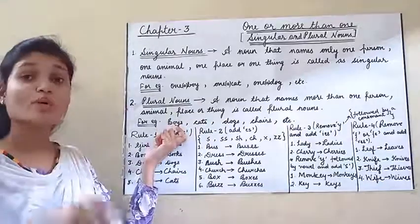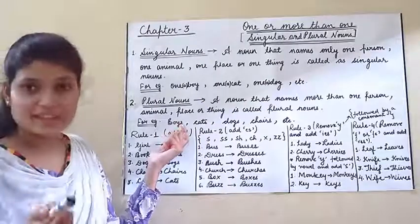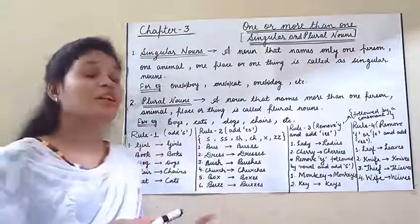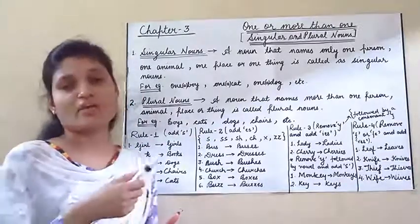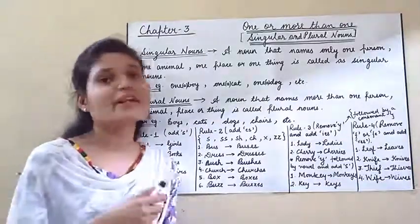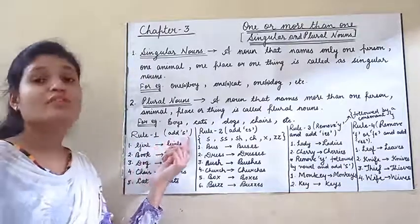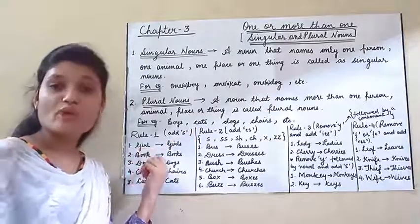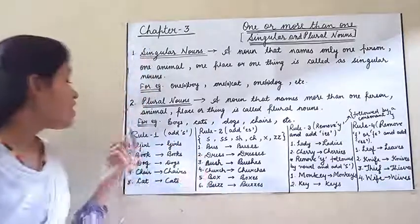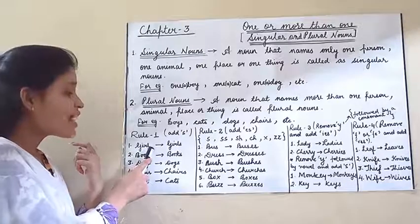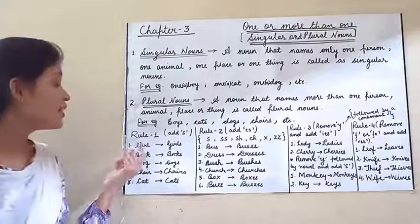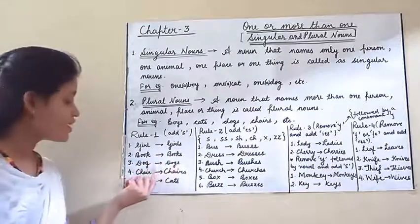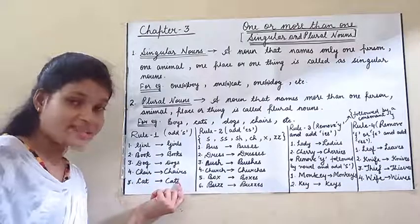Means 'boys' means more than one boy — एक से ज्यादा लड़का, यानी ढेर सारे लड़के. Cats, dogs, chairs, etc. Today we will learn about three to four rules to make plural nouns from singular nouns. The first rule is: add S. We generally add S to the singular noun to make it plural. For example: girl → girls, book → books, dog → dogs, chair → chairs, cat → cats. This is the first rule — we add S to the singular noun.